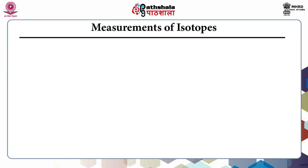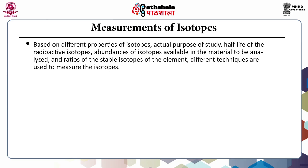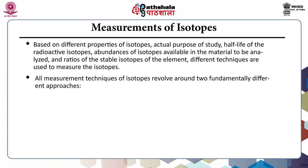How do we measure isotopes? Based on different properties of isotopes — actual purpose of study, half-life of the radioactive isotope, abundance of isotope available in the material, and ratio of stable isotope to the element — different techniques are used. All measurement techniques revolve around two fundamental approaches: counting methods and mass spectrometry.